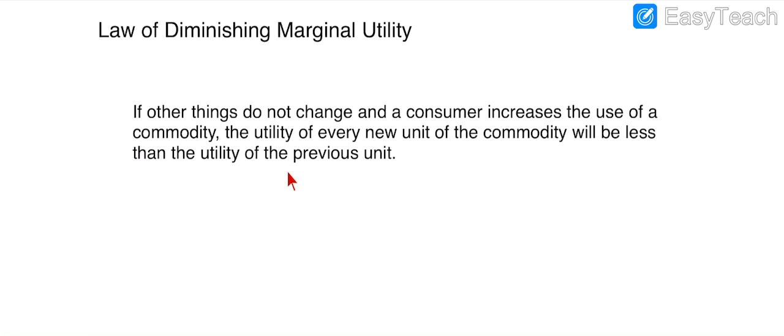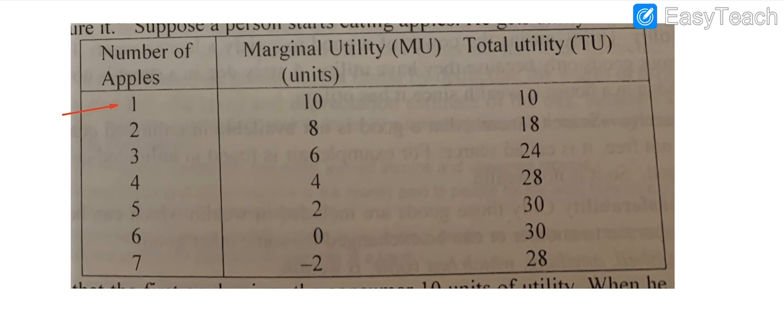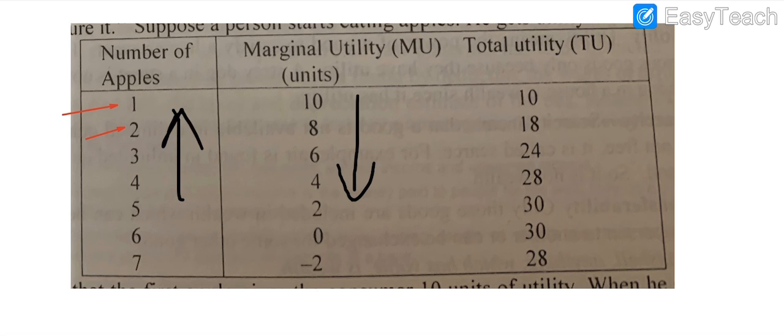Let's explain this law with the help of a table and a diagram. Here are the units of apples and how much marginal utility we obtain from each additional unit. You can see that one unit of apple provides 10 units of marginal utility, and 2 units of apple provides 8 units of marginal utility. As units of apple increase, marginal utility available from these units keeps decreasing. As quantity increases, marginal utility decreases, until at unit 6 the marginal utility reaches 0.